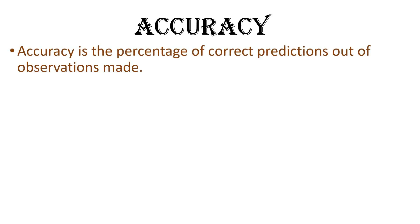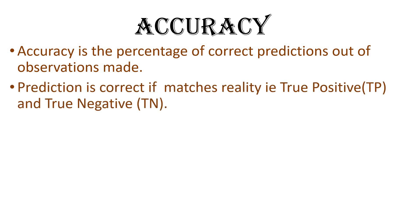The first evaluation method is accuracy. Accuracy is basically the percentage of correct predictions out of total observations. The machine predicts either true or false — either the prediction and reality match, or they don't. Accuracy takes into account the cases where prediction matches reality. This happens in two cases: prediction is true and reality is true, or prediction is false and reality is false.